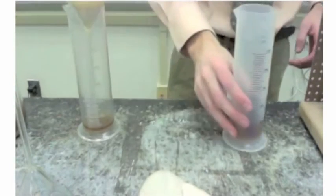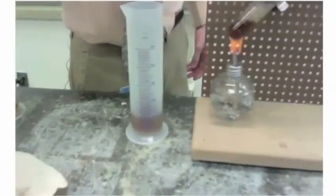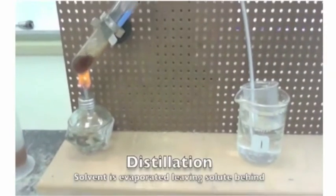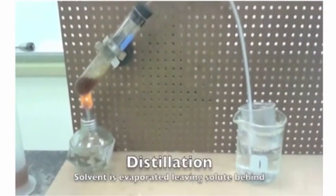What's left in the graduated cylinder is the solution. We can use distillation and boil that solvent, let it evaporate, leaving the solute behind in the test tube.